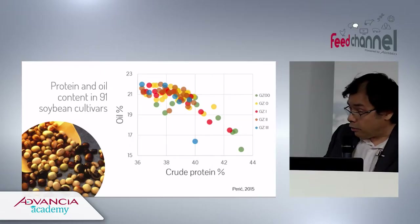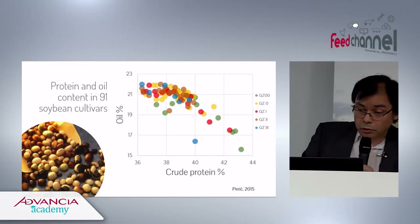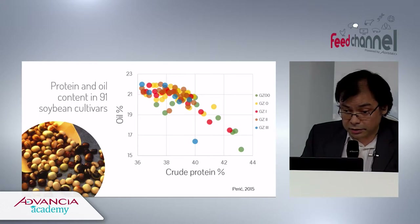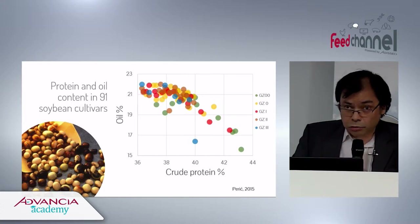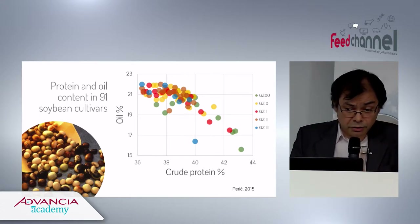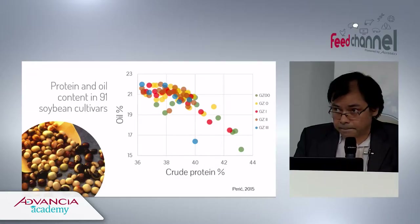This is the variation observed in protein and oil content. Across these almost 100 cultivars, there is variation of about 8 percentage points in protein and almost 7 percentage points in oil.